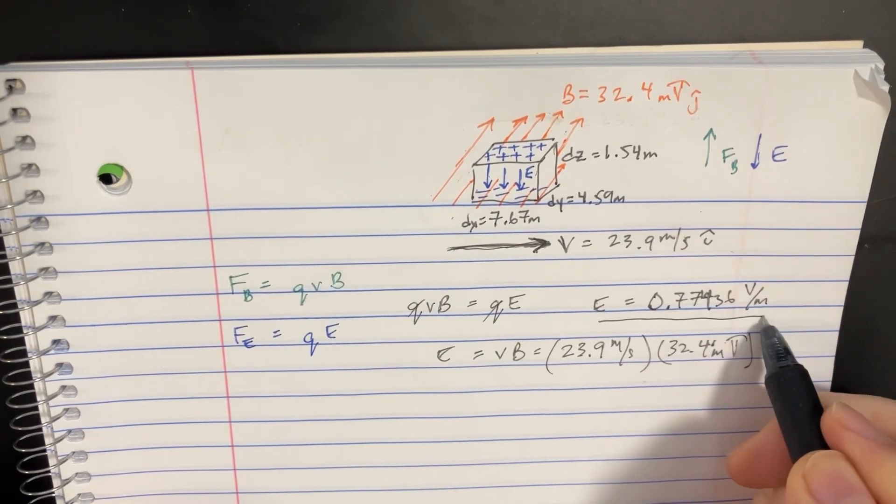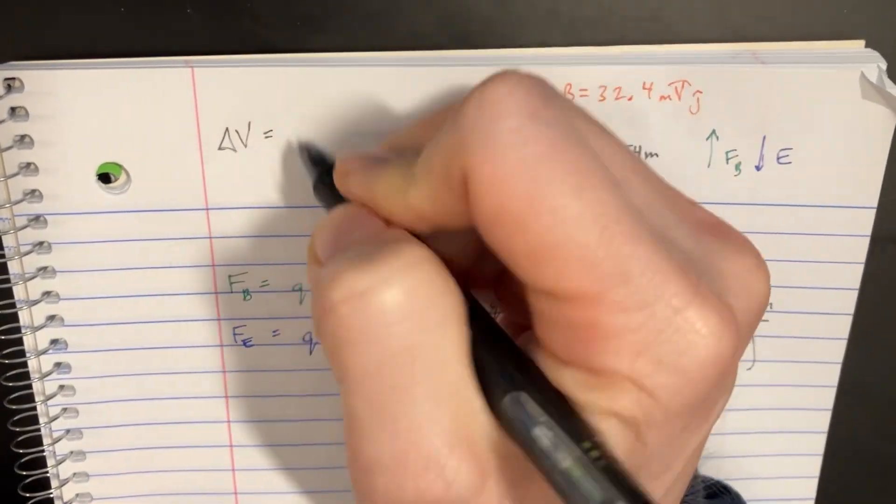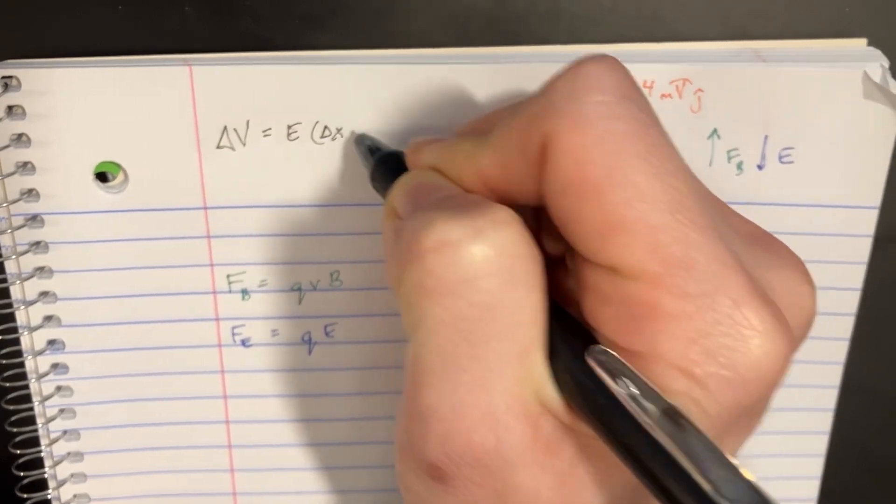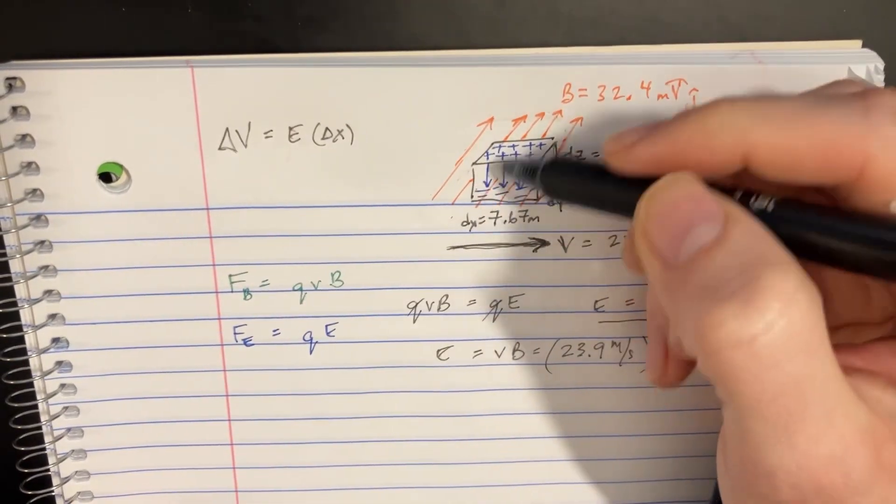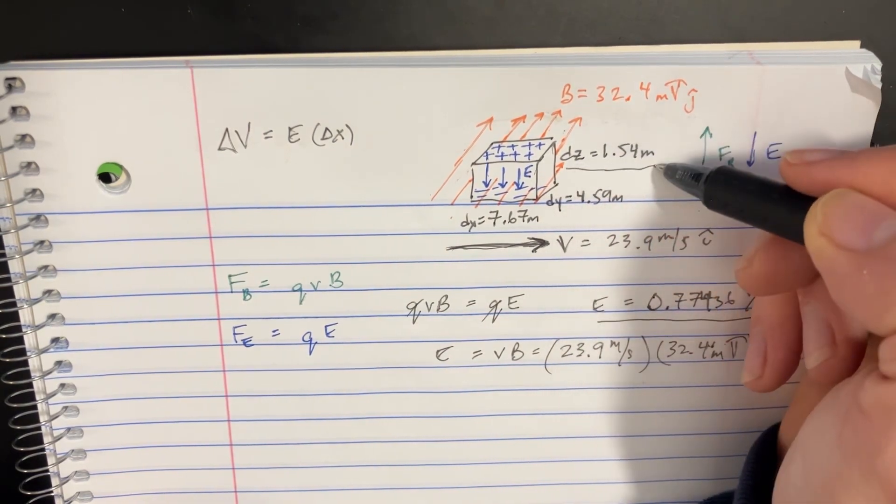Now, they also want to know the potential difference. So that's going to be delta V, which is supposed to be equal to the electric field times the delta X that it's going through. But what is the distance here that it's going through? It's the Z direction. So we're going to use this one.